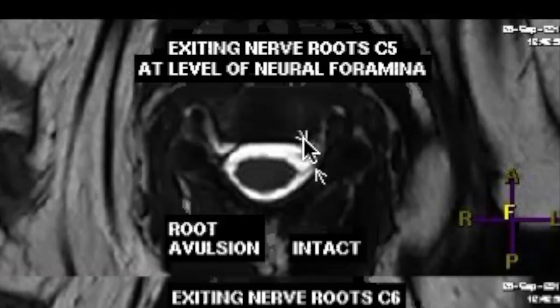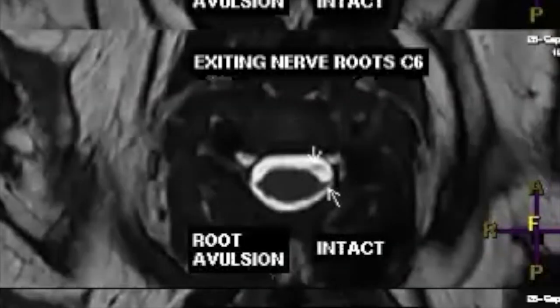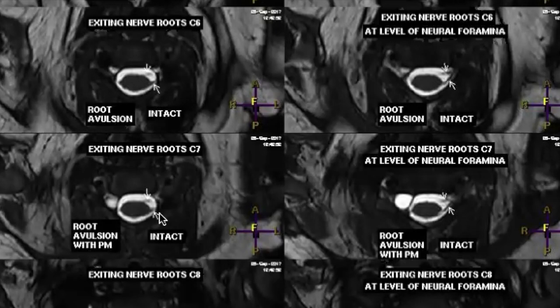Again same at the level of neural foramen, the C5 left-sided rootlets are seen, the right side root is not seen here. Same is the case at C6 level. At C7 level, same thing here.